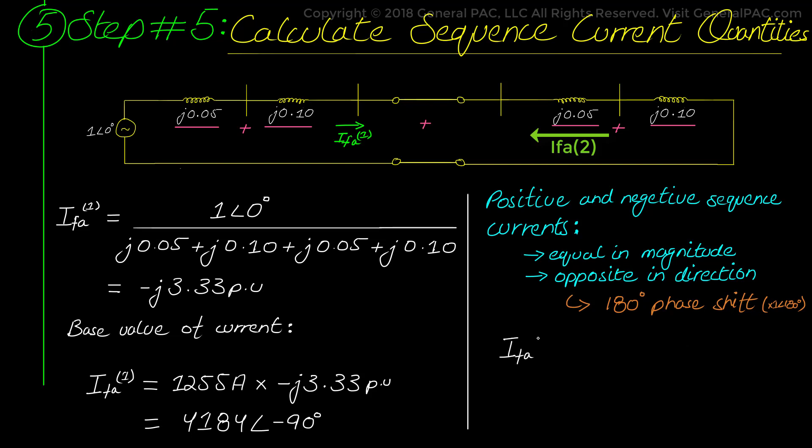So the negative sequence current simply equals 4184 amperes at the angle of positive 90 degrees instead of negative 90 degrees for the positive sequence. So again negative sequence current equals 4184 at the angle of positive 90 degrees.